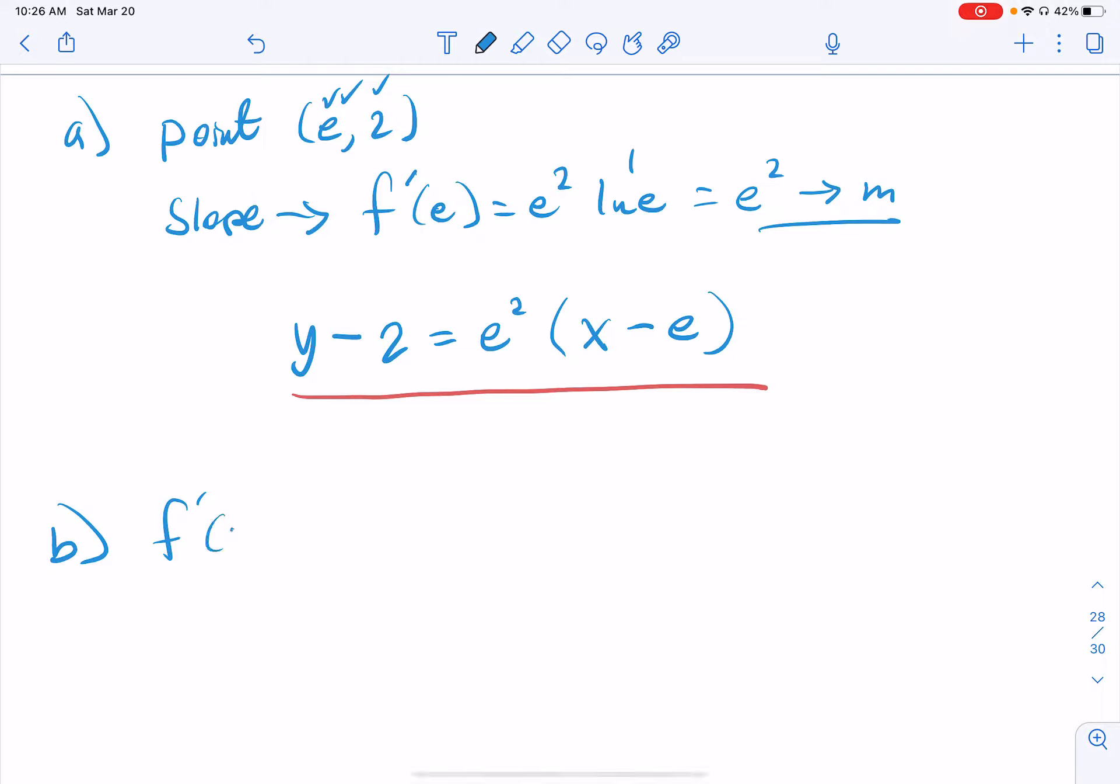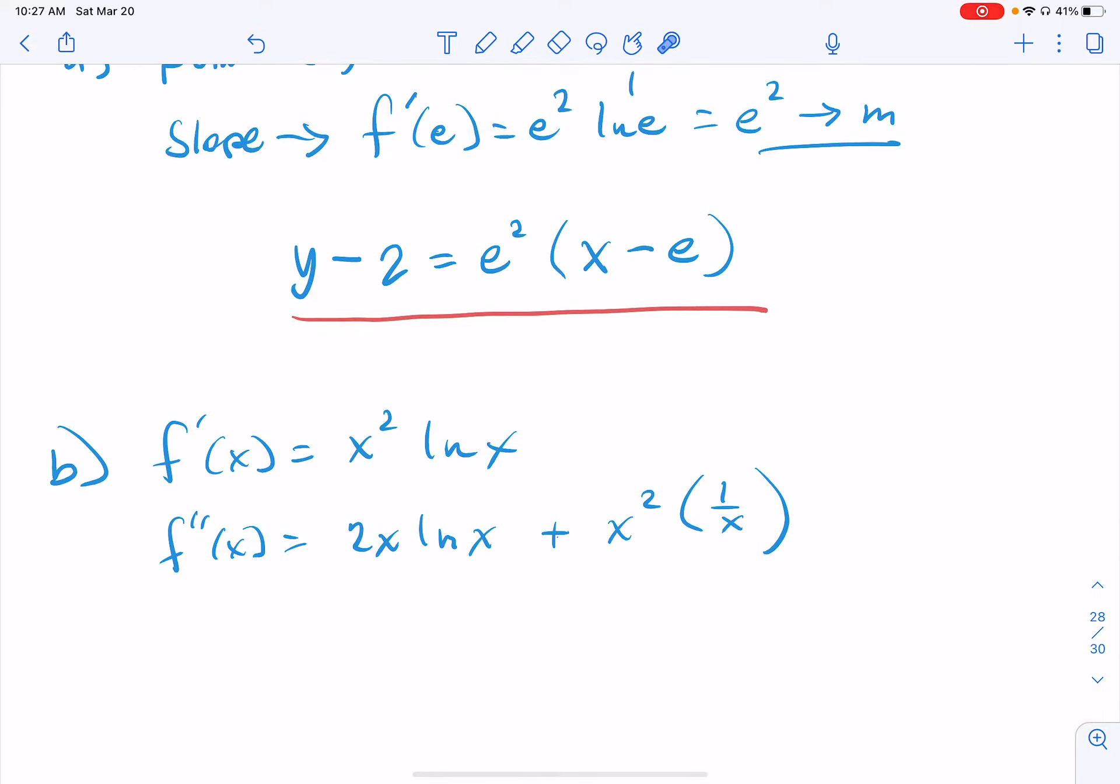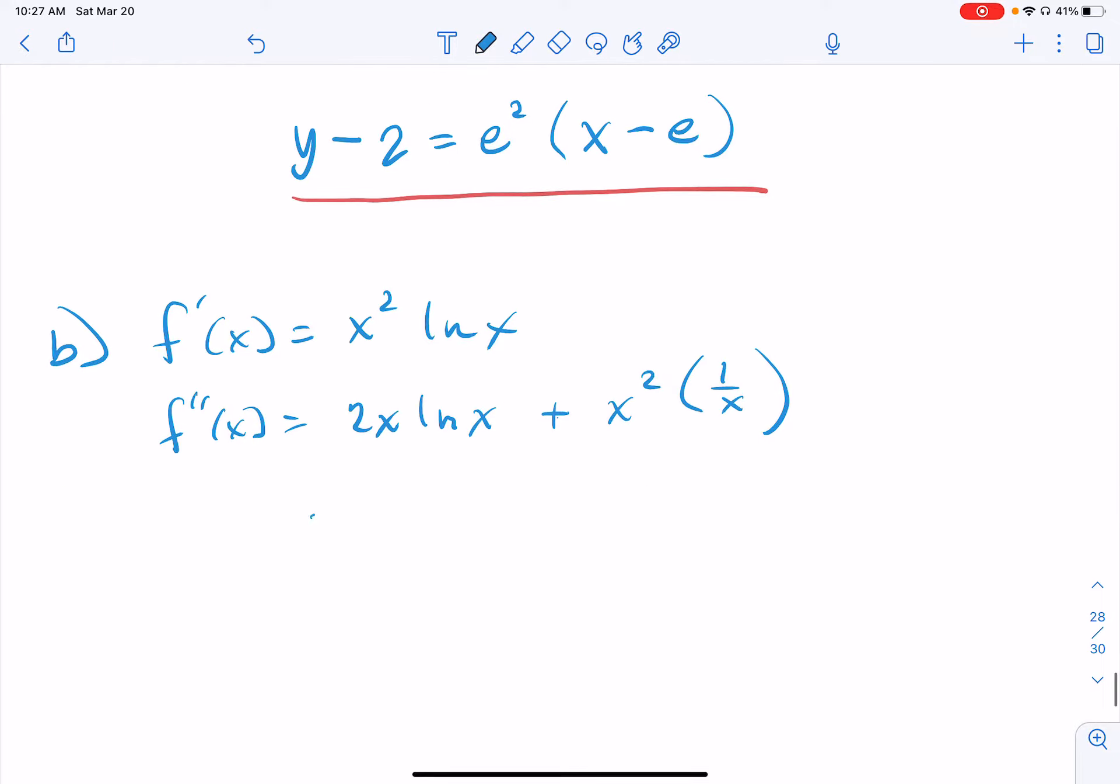First derivative was x squared natural log x. Looks like we're going to have to use the product rule because we've got a product of two functions. Finding the second derivative gives us derivative of the first piece is a 2x times natural log, plus the first one, x squared, times the derivative of the second one, 1 over x, which is nice because one of these things is going to cancel out, one of these factors of x. So our second derivative then should be equal to 2x natural log x plus x.